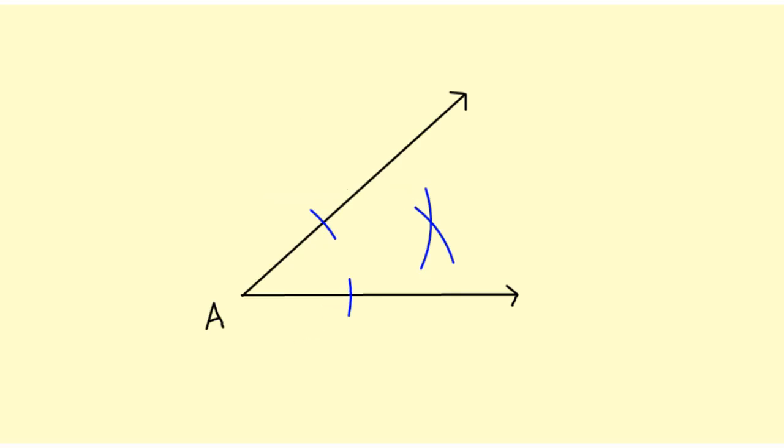Okay, you'll notice that I have an X in the interior of the angle. So I'm going to connect my vertex point A with that point of intersection of the two X's and that will be my bisector.